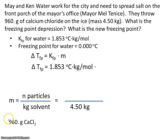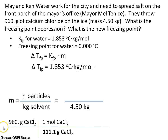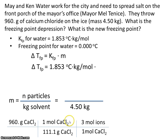We'll use the molar mass from the periodic table to convert grams to moles. Now, if we ended our calculation there, that would tell us how many moles of calcium chloride we have. But we're interested in moles of particles. Calcium chloride, when it dissolves in water, will break up into three particles — one calcium and two chlorides. So one mole of calcium chloride will have three moles of ions.